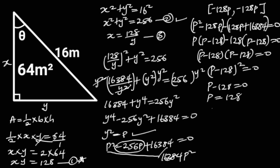So it follows that y squared is equal to 128. Taking the square root of both sides will give us y is equal to 8 root 2.